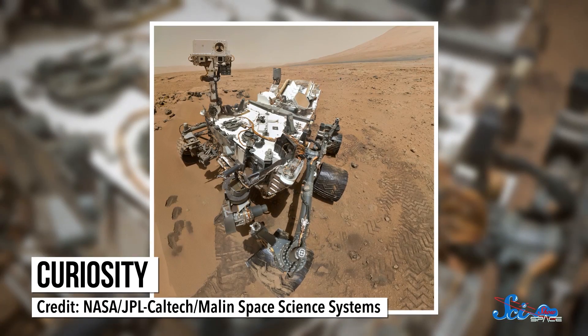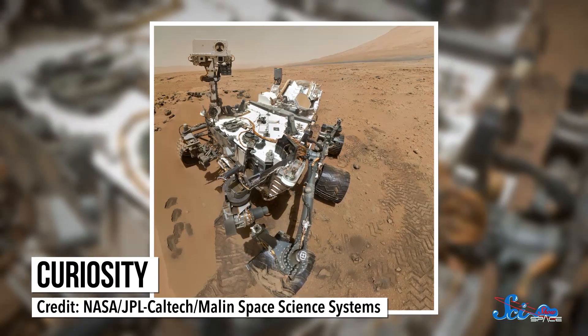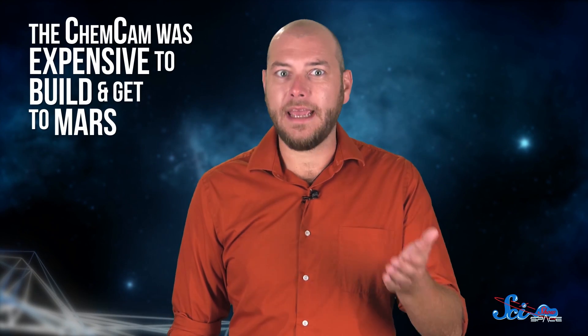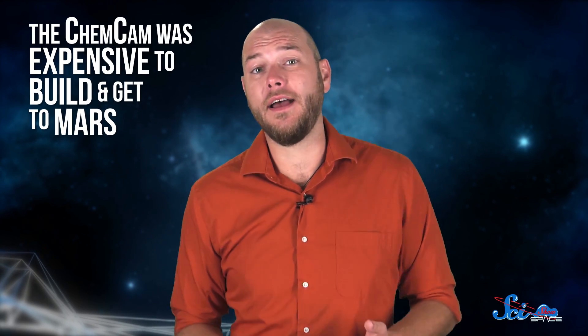Ideally, these telescopes would be able to latch onto an asteroid's surface and do a chemical analysis on the spot. We do have the technology to do that now. Curiosity, the Mars rover, has an onboard lab called the ChemCam for analyzing the composition of Martian soil. But the ChemCam was expensive to build and get to Mars, and it's one-of-a-kind.